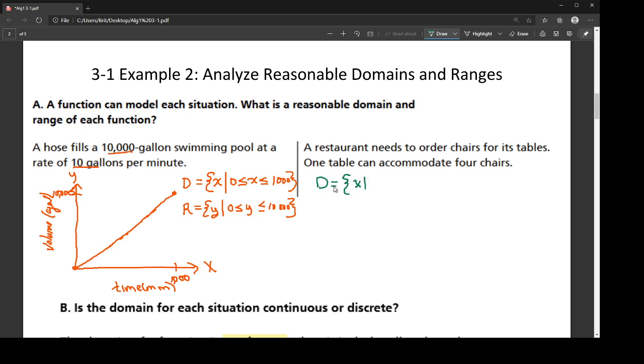So again, I'm going to say the domain equals the set of all x values where... And let's think about this restaurant. So they're ordering tables and chairs. Well, they're ordering chairs. They already have the tables, apparently, according to this. So the table is my x value. It's my input. Because the number of tables that this restaurant has determines the number of chairs that it's purchasing.